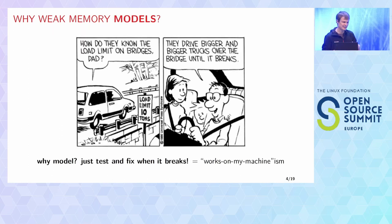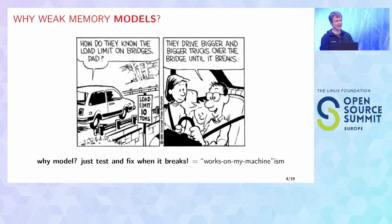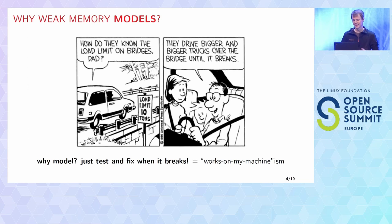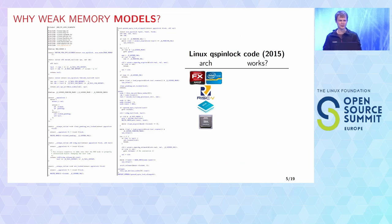People might say: this weak memory exists, but why do we need a model? We could just do it like Calvin's dad suggests — drive bigger and bigger trucks over the bridge until it breaks. This is how a lot of software has been developed. Why don't we just do the same for concurrent software? Of course, this is 'works on my machine'-ism. We can see how that worked with a very concrete example from the Linux kernel.